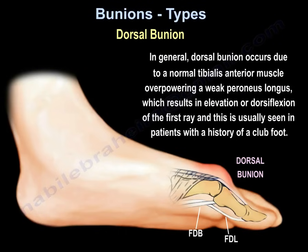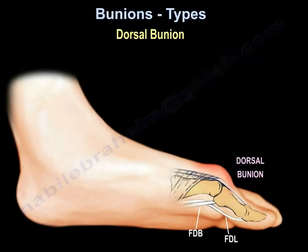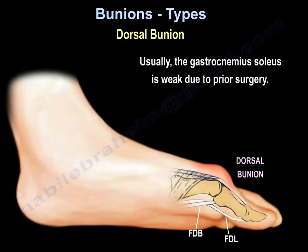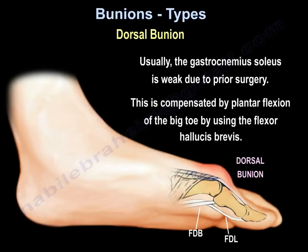In general, dorsal bunion occurs due to a normal tibialis anterior muscle overpowering a weak peroneus longus, resulting in elevation or dorsiflexion of the first ray. This is usually seen in patients with a history of clubfoot, where the gastrocnemius-soleus is weak due to prior surgery, compensated by plantar flexion of the big toe using the flexor hallucis brevis. Treatment involves tibialis anterior lengthening, or flexor hallucis longus transfer to the plantar aspect of the first metatarsal head, and possibly a plantar flexion osteotomy of the first ray.